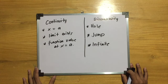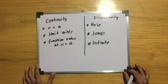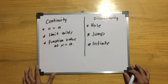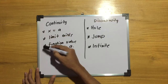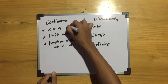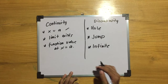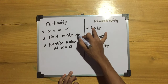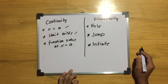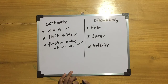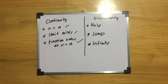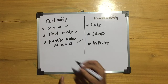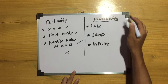Now let's go on to continuity. A function is called continuous at x equals a if and only if 3 conditions are met. First, the function is defined at x equals a, meaning f(a) equals a real number. Second, the limit exists. Third, the limit of the function as x approaches a equals the function value at x equals a. If a function doesn't meet these 3 conditions, it is a discontinuity.